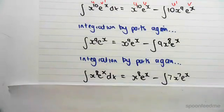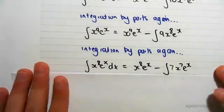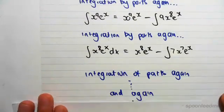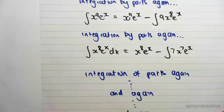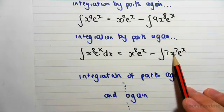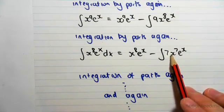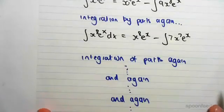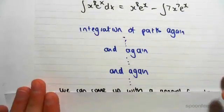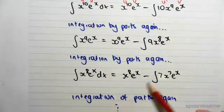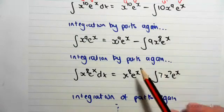We'd have to apply integration by parts again and again, and each time we do that, the power drops. Eventually the power disappears down to something we can integrate. So what we can do is come up with a general reduction formula to handle this efficiently.